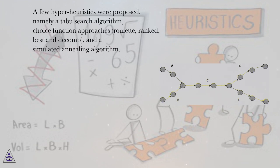A few hyper-heuristics were proposed, namely a tabu search algorithm, choice function approaches, roulette, rank, best and decomp, and a simulated annealing algorithm.